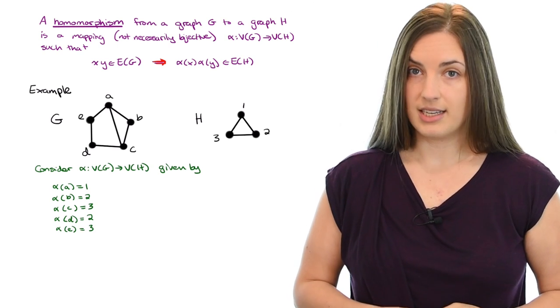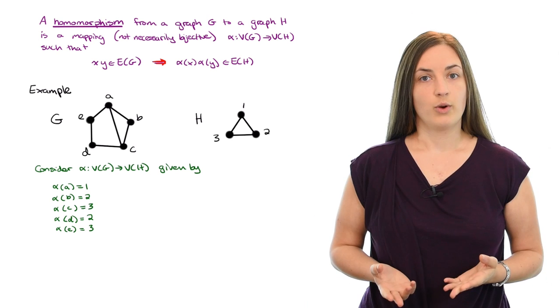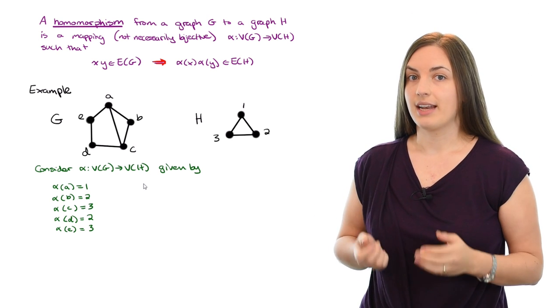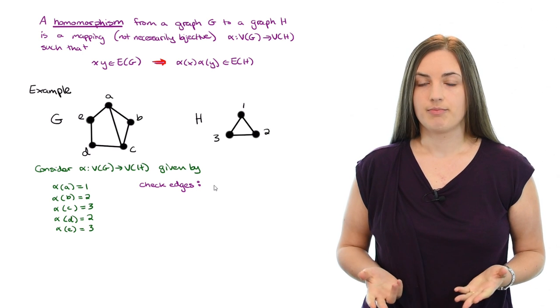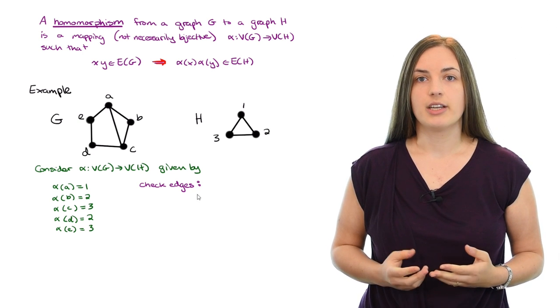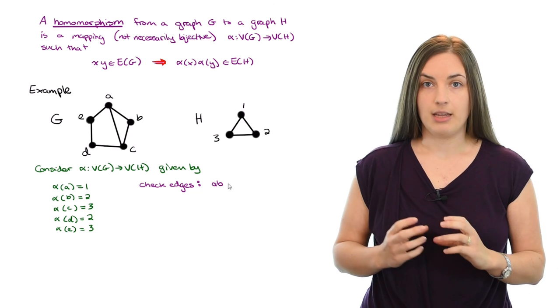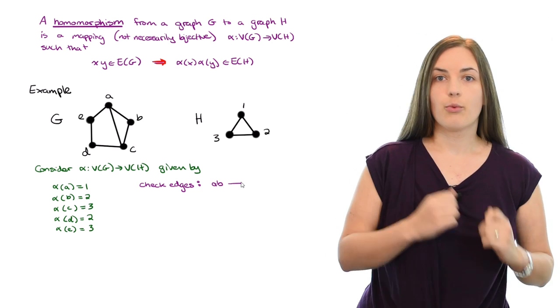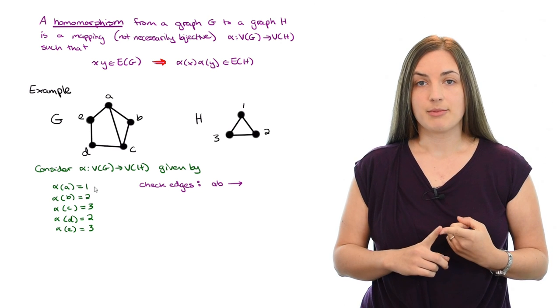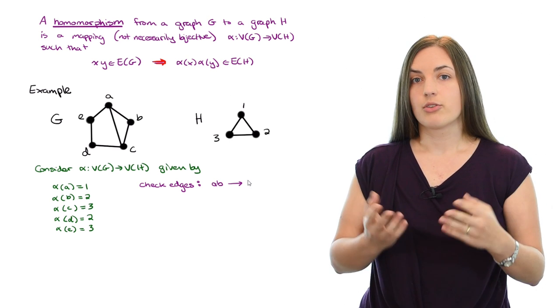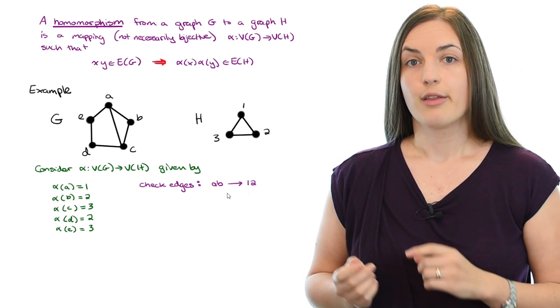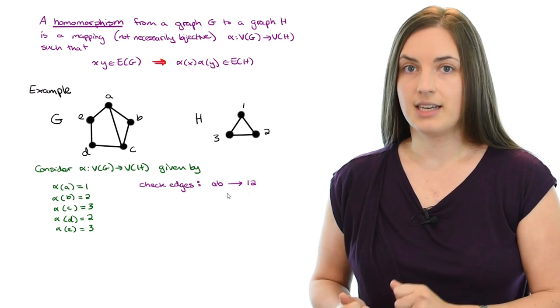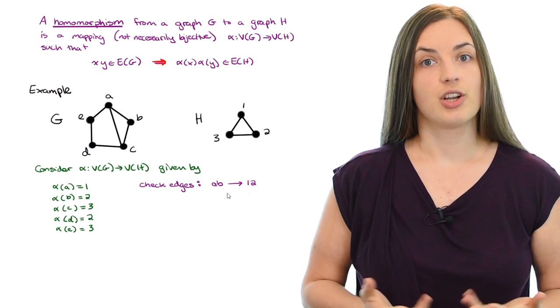Now we want to check if this is indeed a homomorphism. What do we need to do? We need to check that every edge of G gets mapped to an edge of H. So I'm going to use a shorthand notation here and I'm just going to write down AB as the edge AB from G and let's look at where it gets mapped to. A gets mapped to 1 and B gets mapped to 2, so the edge gets mapped to 1, 2. Okay, so we know that that edge AB did indeed get mapped to an edge of H.